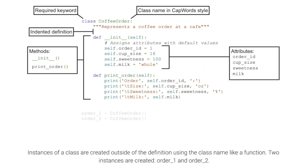Instances of a class are created outside of the definition using the class name like a function. Two instances are created: order1 and order2.